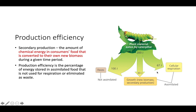In this example, when we look at the plant material eaten by a caterpillar, we have 200 joules total. Of those 200 joules eaten by the caterpillar, 100 joules were lost to feces. That was not assimilated, so it is not taken into account when we're looking at secondary production.